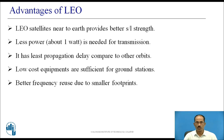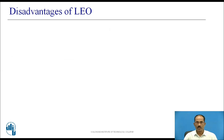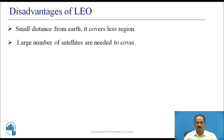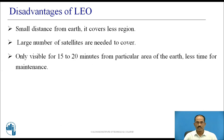Better frequency reuse is achieved due to smaller footprints. Disadvantages of LEO: Due to the smaller distance from earth, LEO satellites cover less region. Large number of satellites are needed to cover a given area. LEO satellites are visible only for 15 to 20 minutes from a particular area of the earth, leaving less time for maintenance like testing, troubleshooting, etc. LEO satellites have a shorter lifespan, usually 5 to 8 years, compared to GEO.